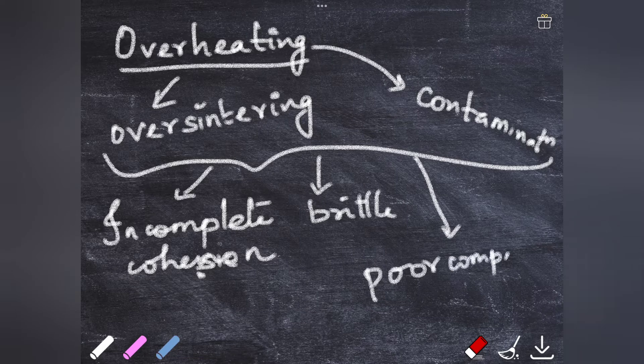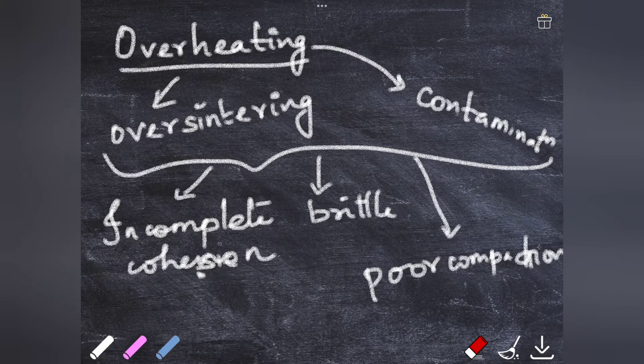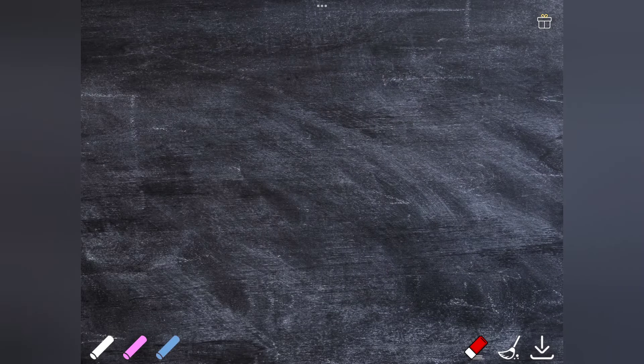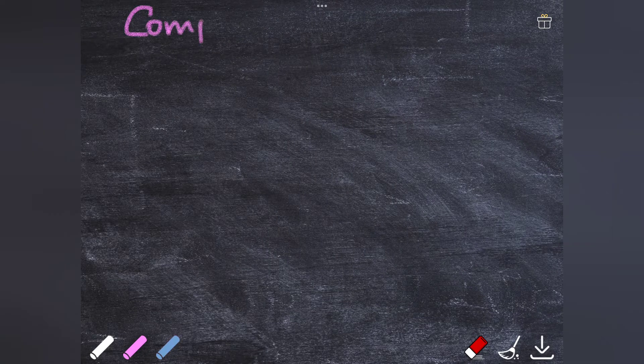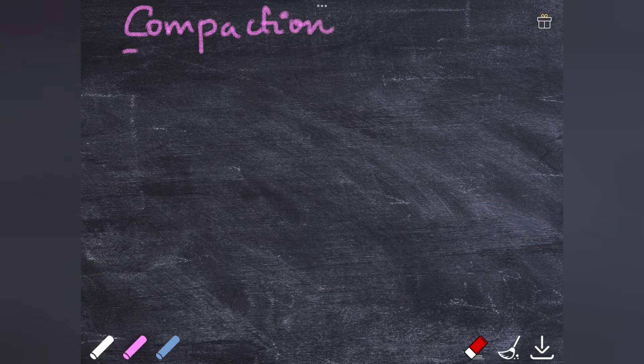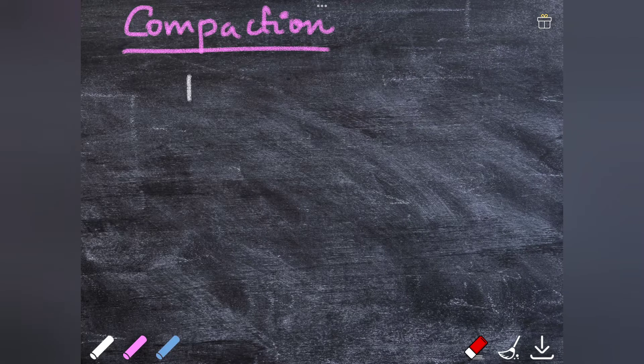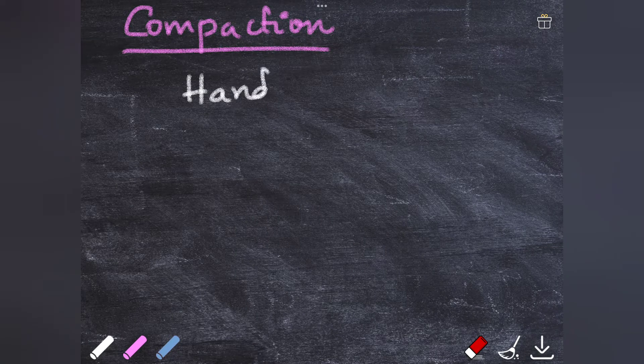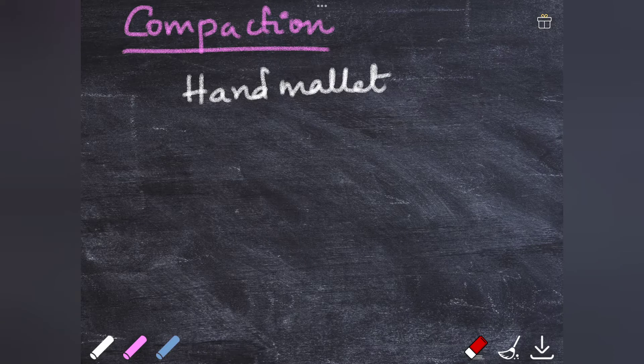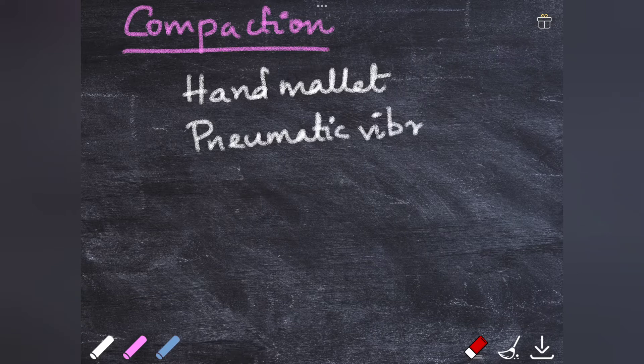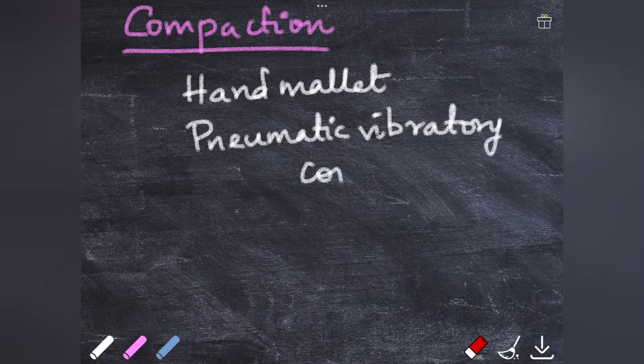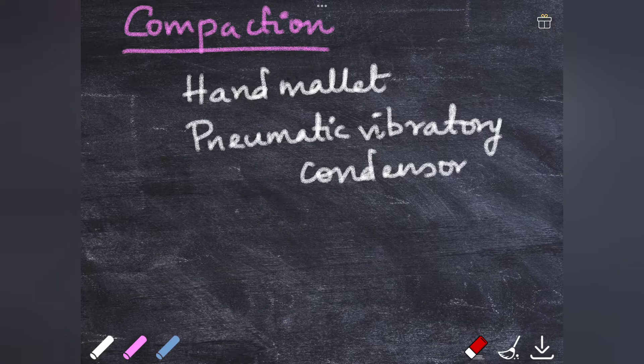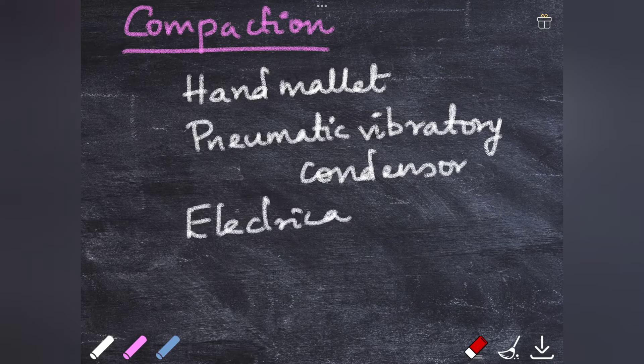Next is compaction. Here the metal is going to be forced closely into the cavity. This process of compaction can be done by using three instruments: the first one is the hand mallet, the second one is a pneumatic vibratory condenser, and the third one is the electrically driven condensers.